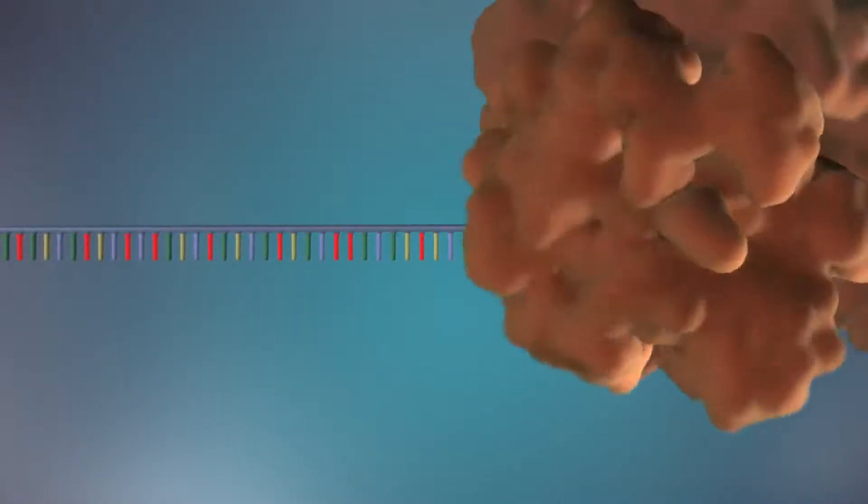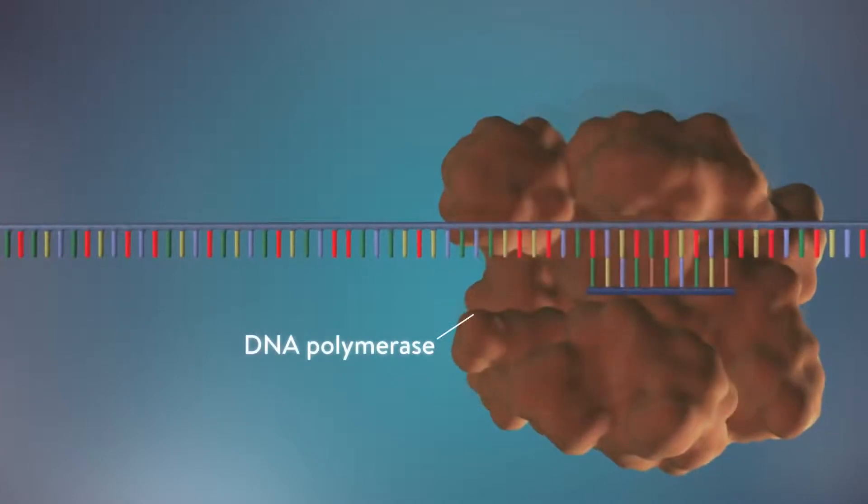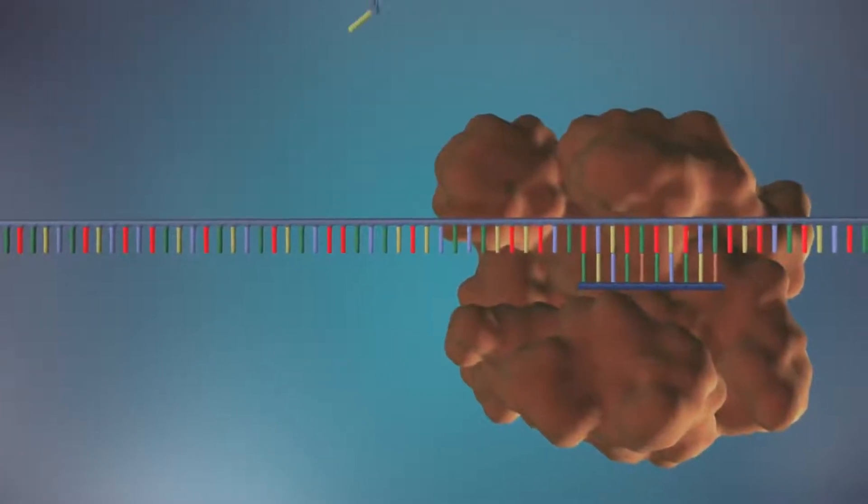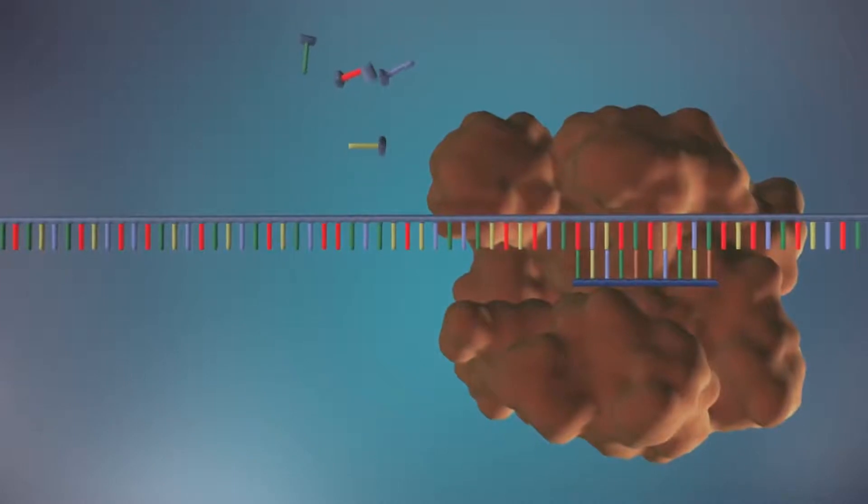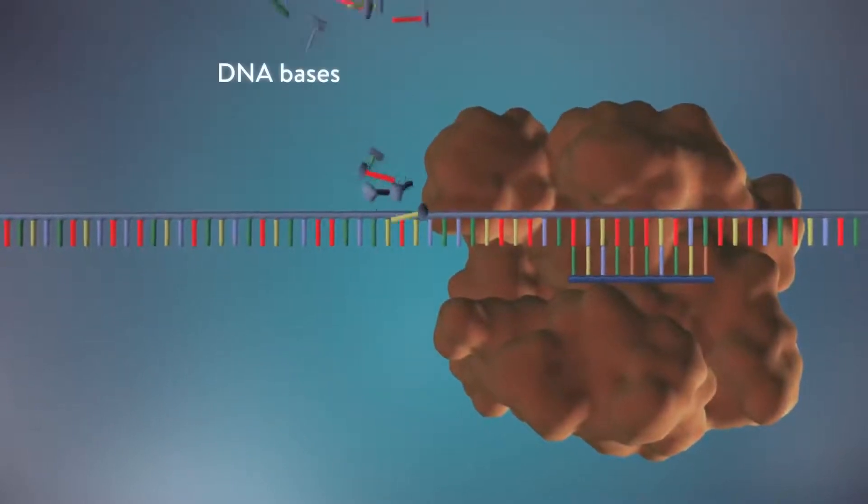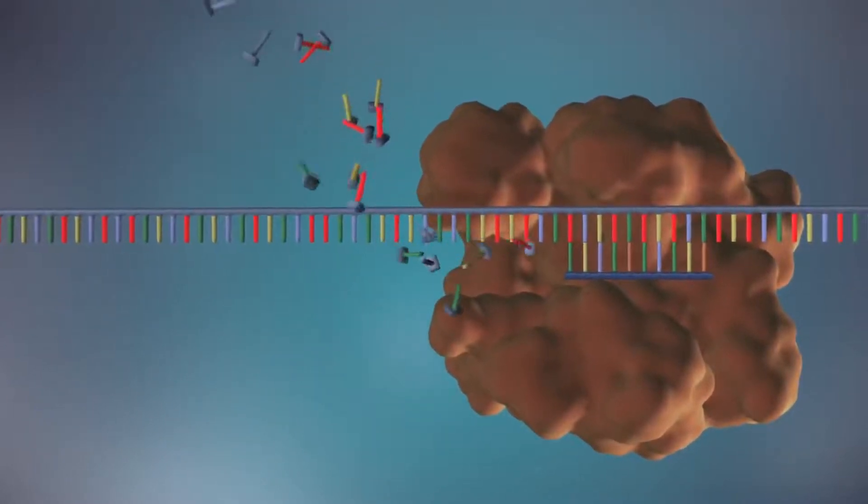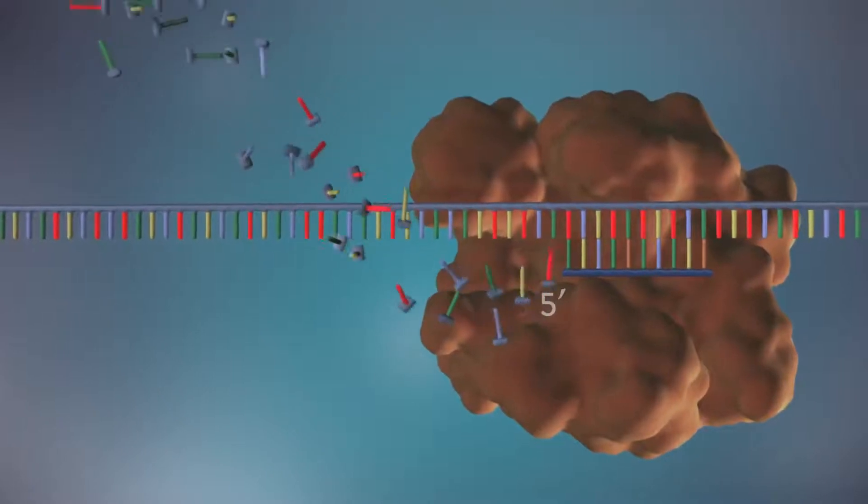An enzyme called DNA polymerase binds to the primer and will make the new strand of DNA. DNA polymerase can only add DNA bases in one direction, from the five prime end to the three prime end.